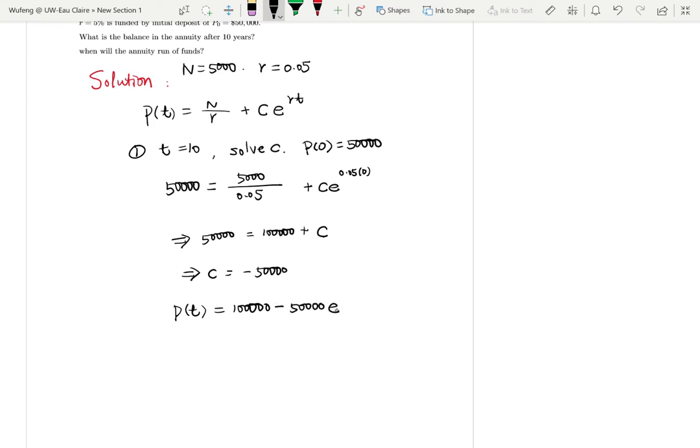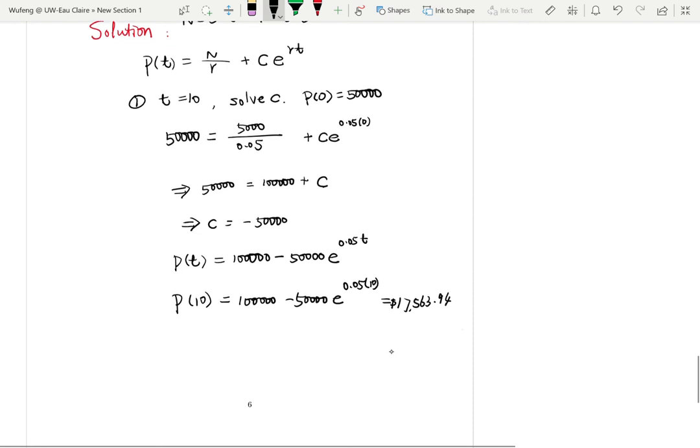Next is to find out after 10 years. Plug it in: 100,000 - 50,000e^(0.05×10), which gives you $17,563.94. That's the first part.